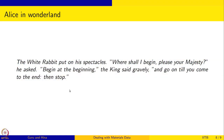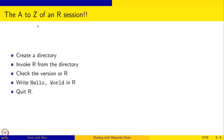So what is the first thing we want to do? Here is a quote from Alice in Wonderland: the White Rabbit asked 'Where shall I begin?' and the King said 'Begin at the beginning and go on till you come to the end, then stop.' We want the first session to be the A to Z of an R session: create a directory, invoke R from that directory, check the version of R, write the first hello world program, and then quit R.